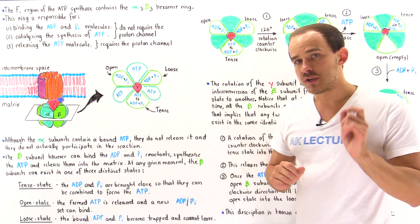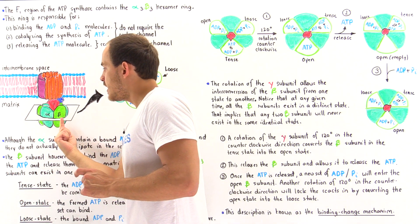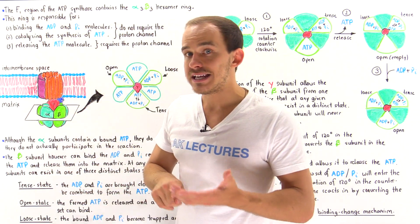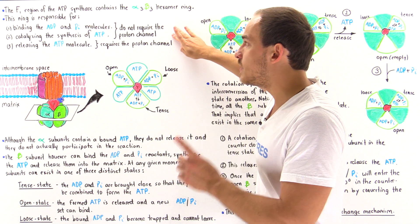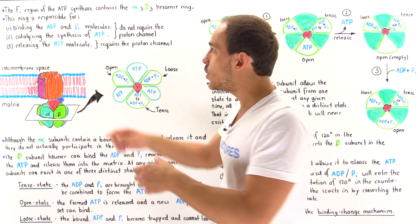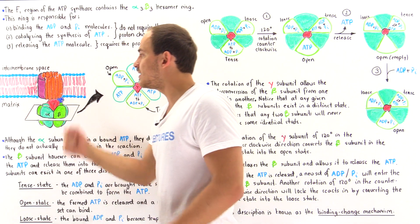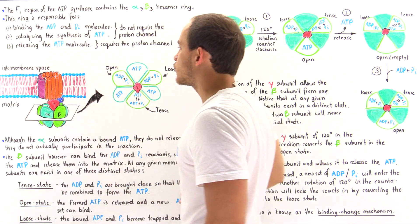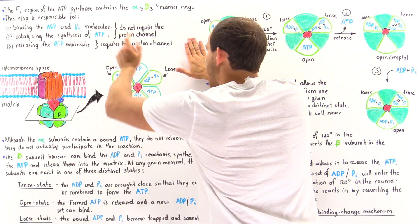I want to emphasize an important point. The hexamer structure can carry out each of these steps, but steps one and two can take place in the absence or presence of the proton motive force — that is, regardless of whether the proton electrochemical gradient exists. The hexamer can bind ADP and orthophosphate and convert them into ATP without the F0 region present.